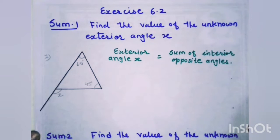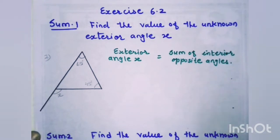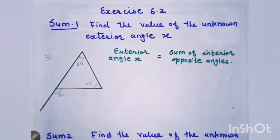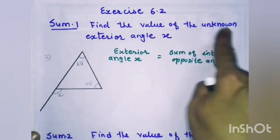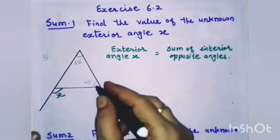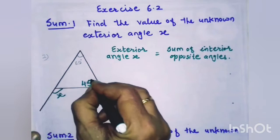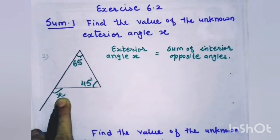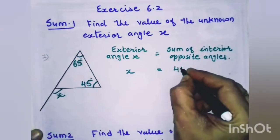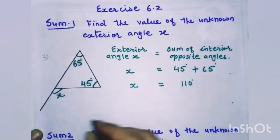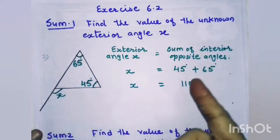The sum of the two opposite interior angles is equal to the measure of the exterior angle. Now in exercise 6.2, we have to find the value of the unknown exterior angle x. The opposite interior angles are given as 45 degrees and 65 degrees. So x is equal to 45 degrees plus 65 degrees, which gives us x equals 110 degrees.